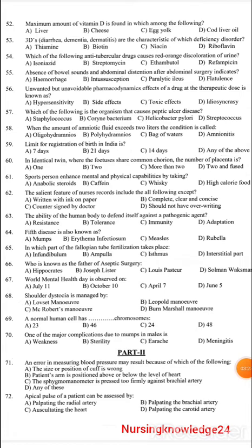In which part of the fallopian tubes does fertilization take place? Options: infundibulum, ampulla, isthmus, or interstitial part. The answer is the ampulla.